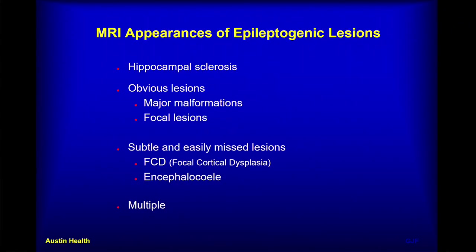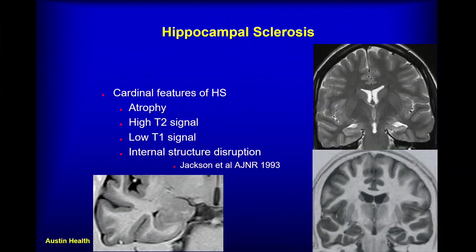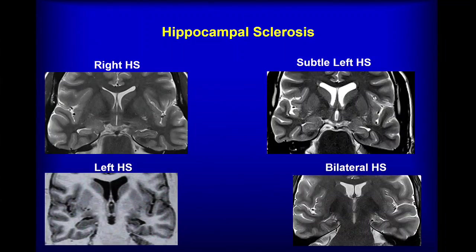I will now illustrate some common and not-so-common causes of epilepsy seen on MR, focusing on lesions that are subtle and easily missed where functional imaging can play an important role. The cardinal features of hippocampal sclerosis, documented by Graham Jackson in 1993: the affected hippocampus is small with bright T2 signal — brighter than the other side and brighter than adjacent grey matter — with atrophy, high signal, low T1 signal, and loss of internal structure. We can have right or left hippocampal sclerosis, subtle hippocampal sclerosis, and a particularly difficult case is bilateral hippocampal sclerosis, where there is no normal contralateral side for comparison.